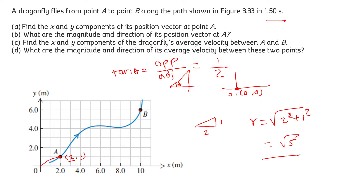In order to find the x and y component of the dragonfly's average velocity, we have to find the total distance travelled along the x axis and the total distance travelled along the y axis. This distance along the x axis comes out to be 8, and the total distance along the y axis would be 6 minus 1, which comes out to be 5, divided by the time taken, which is 1.50 seconds.